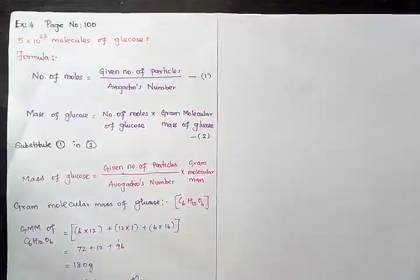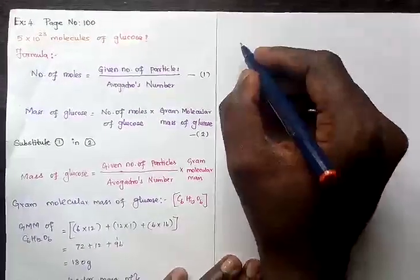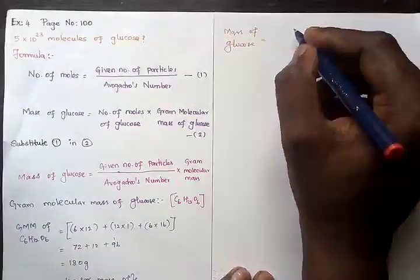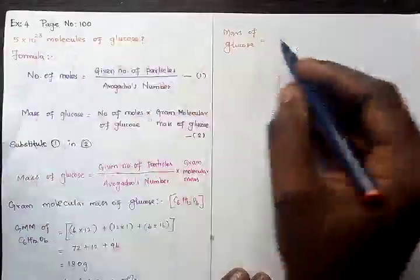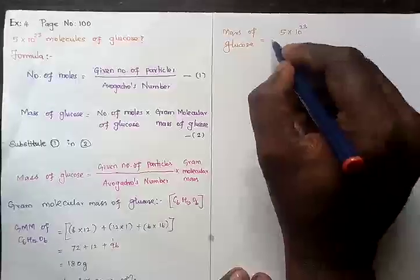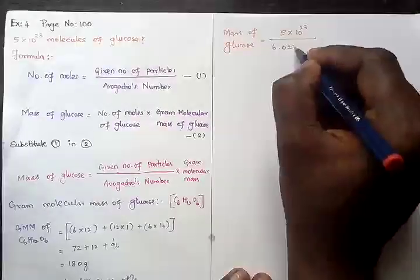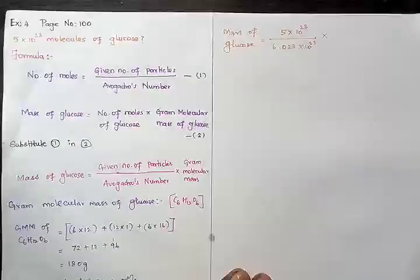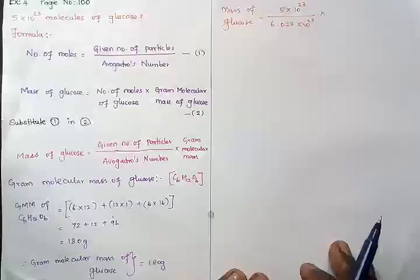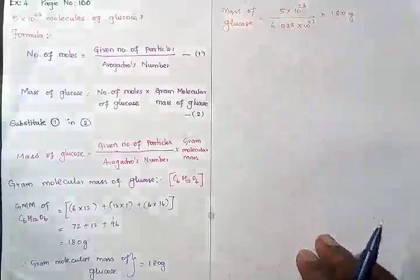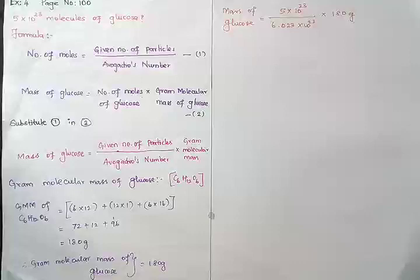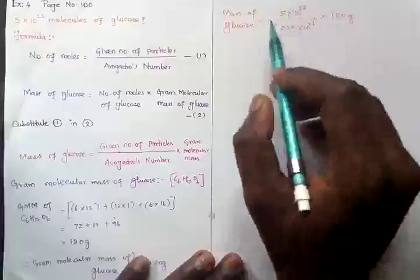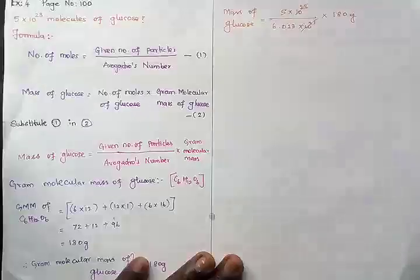Mass of glucose equals the given number of particles, which is 5 × 10²³, divided by Avogadro's number — that is 6.023 × 10²³ — multiplied by the gram molecular mass we calculated, which is 180 grams. The 10²³ terms cancel out, leaving us with 5 × 180 divided by 6.023.